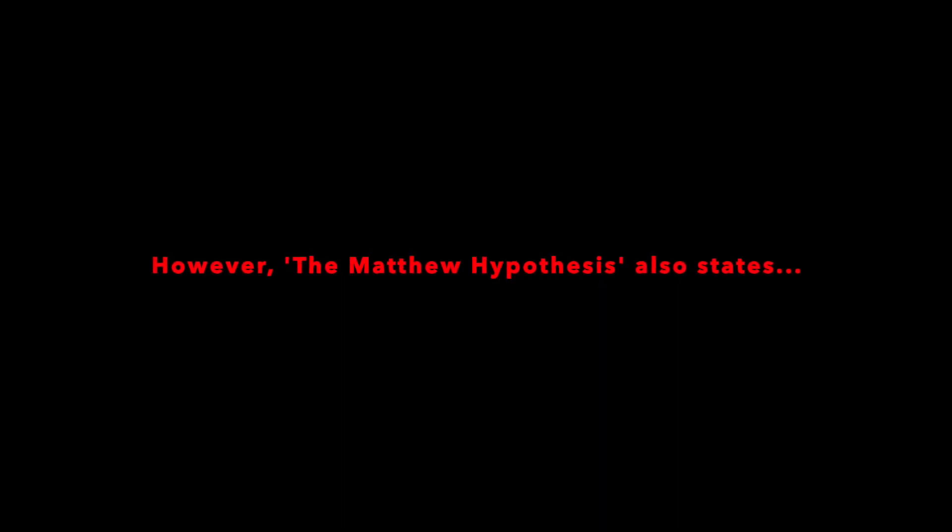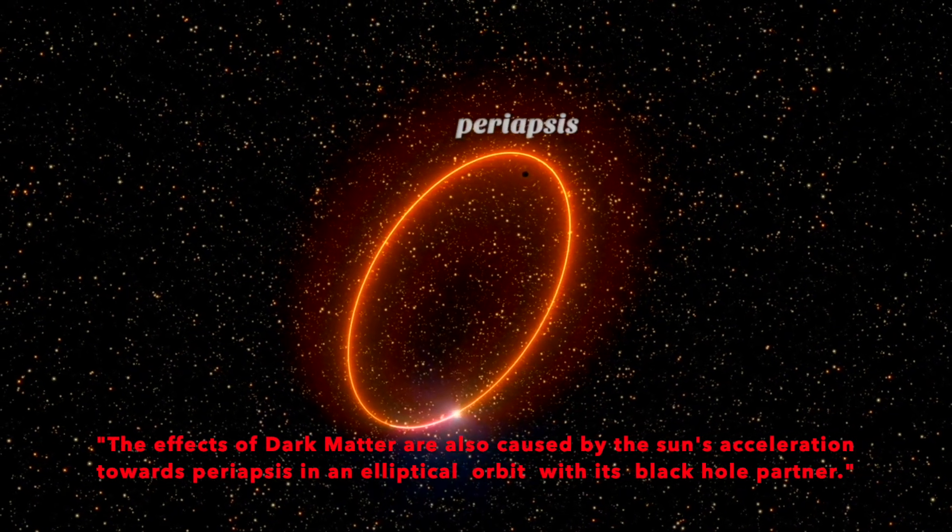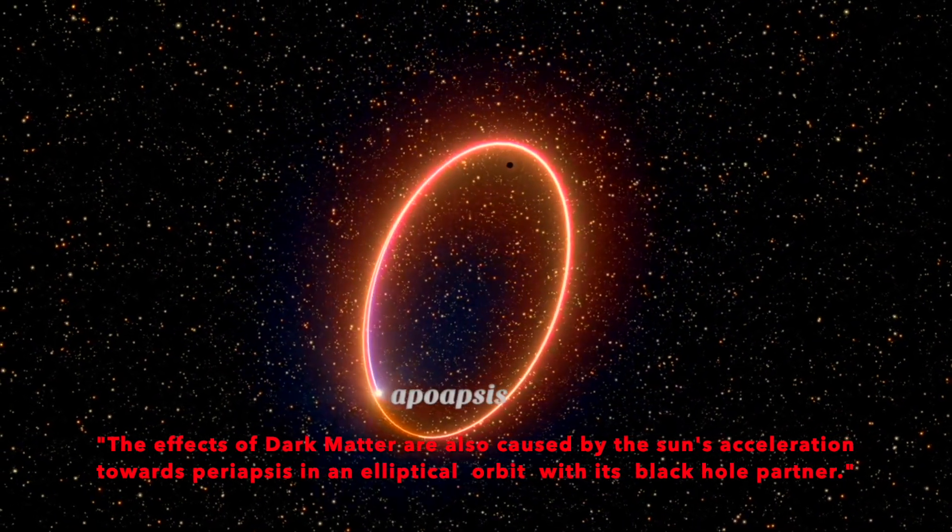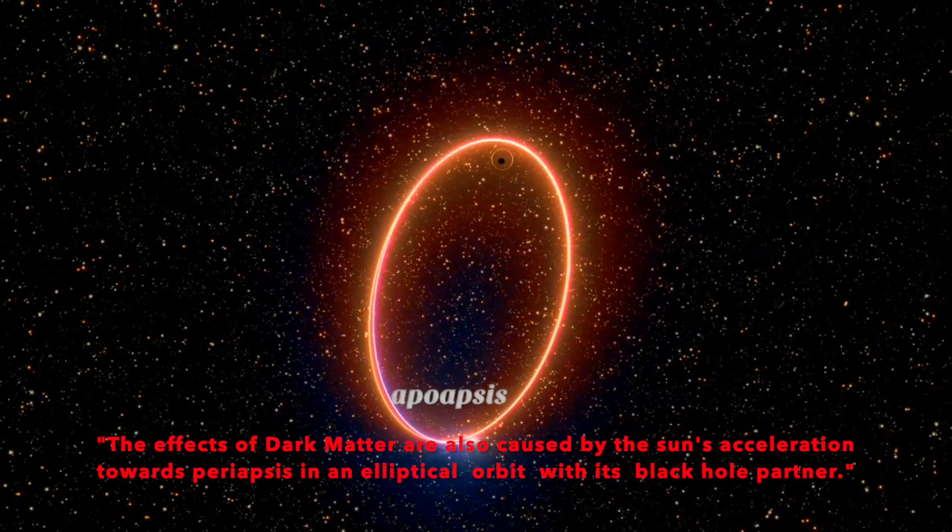However, the Matthew hypothesis also states the effects of dark matter are also caused by the Sun's acceleration towards periapsis in an elliptical orbit with its black hole partner.